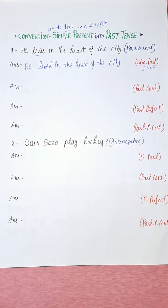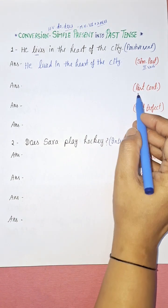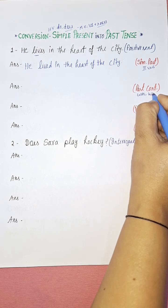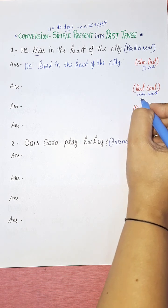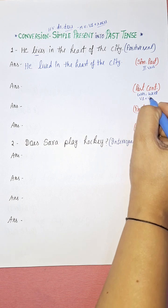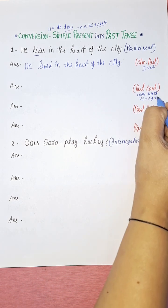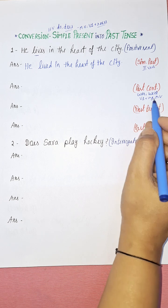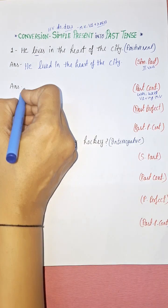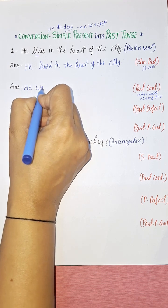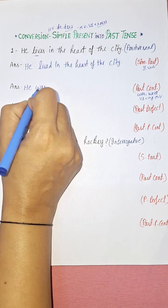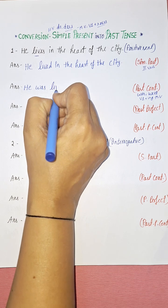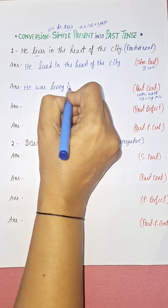Next, convert the same sentence into past continuous tense. The past continuous helping verb is 'was' or 'were', and as a main verb we use the present participle form — V1 plus -ing. With 'he' (singular) we use 'was'. So it becomes: 'He was leaving in the heart of the city.'